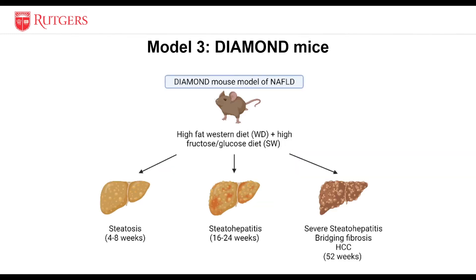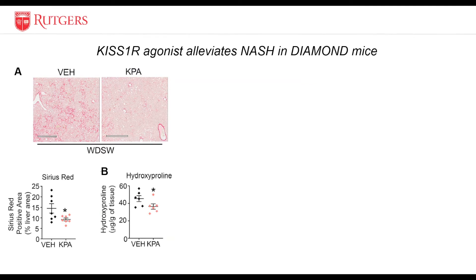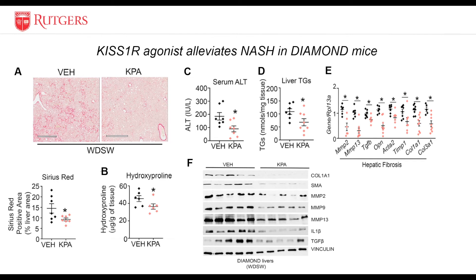To understand the potential role of the kispeptin pathway in NASH, we used DIAMOND mice, which is a diet-induced animal model of non-alcoholic fatty liver disease. These mice recapitulate human disease very well when placed on a high-fat Western diet and sugar water. We treated the mice with a kispeptin analog at the 33-week time point and looked at the effect on reducing fibrosis. We did Sirius Red staining to visualize collagen fibers, and in our vehicle DIAMOND mice there is a significant increase in Sirius Red staining, which is reduced in our kispeptin analog-treated mice. We also observed significant reductions in liver hydroxyproline levels, serum ALT levels, liver triglyceride levels, and markers of fibrosis at both the mRNA and protein levels.